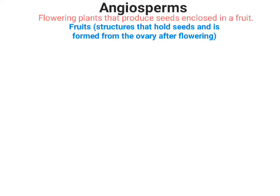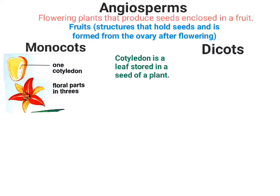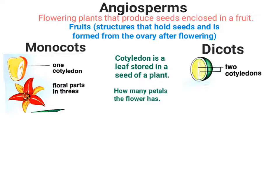Angiosperms can be divided up into two groups: monocots and dicots. Monocots have one cotyledon, which is a seed leaf or part to their seed, and they have flower parts in groups of three. Dicots, on the other hand, have two cotyledons to their seeds, and they have flowering parts in groups of four or five.